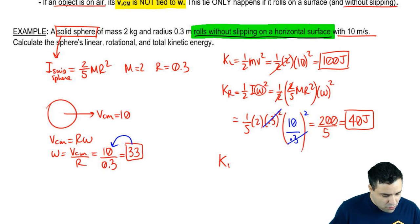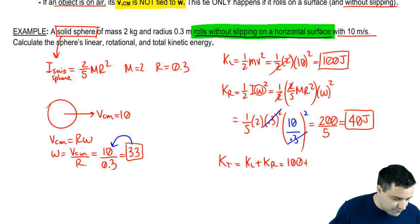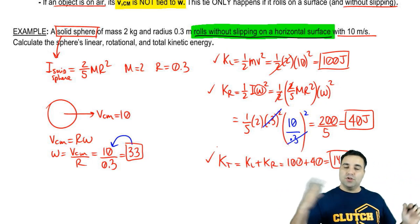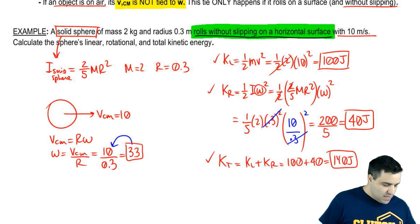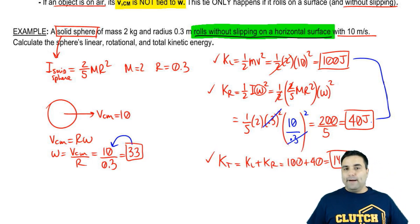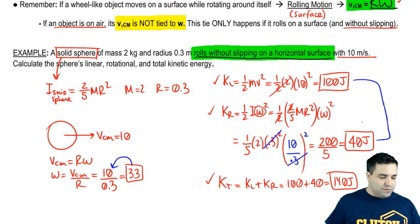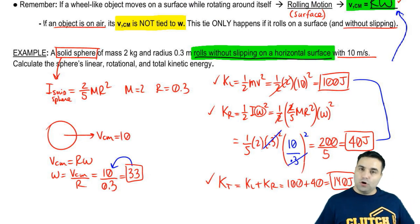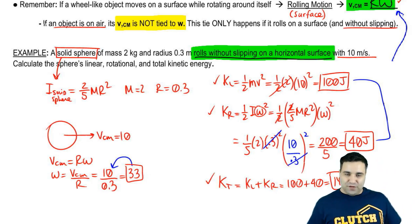And then for the total kinetic energy, for total kinetic energy, we're going to have kinetic linear plus kinetic rotational, 100 plus 40, 140 joules. So that's linear, rotational, and the total energy. It's got two types of energy. So you add up linear with the rotational. Notice that they're not necessarily the same. And remember that we can use this equation here because it's rolling on a surface. That's it for this one. Hopefully it makes sense. Let me know if you have any questions.